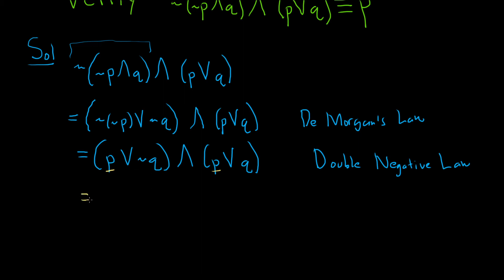So we can write this as p or, and then we can write this as q, not q, and q.